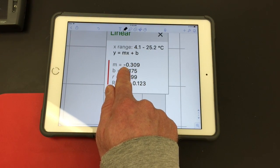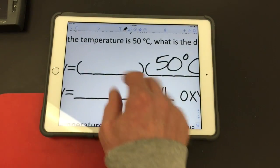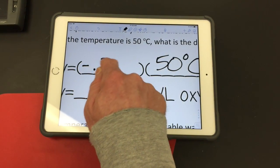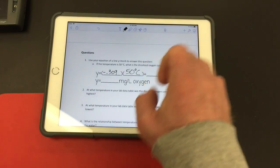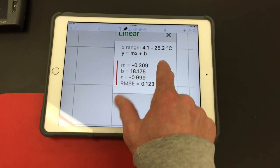So my m value is negative 0.309. And my b value is 18.175.